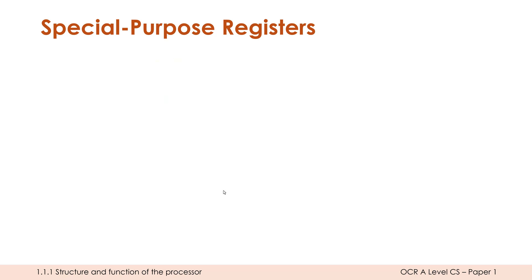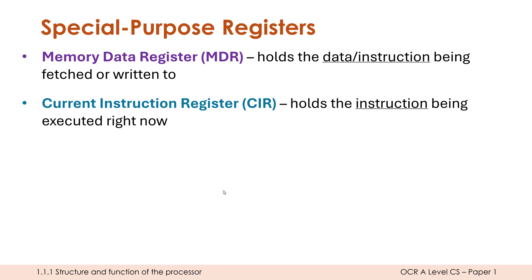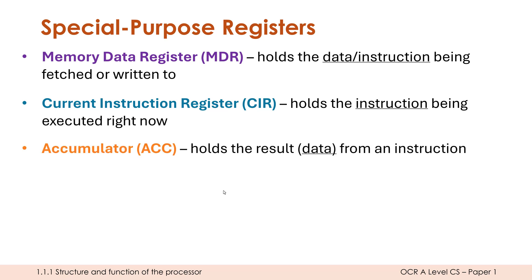Those two registers — PC and MAR — hold addresses. The next three hold either data or instructions. The MDR, or memory data register, is really the sibling of the MAR: the MAR holds the address, while the MDR holds the actual data or instruction being fetched or written. The current instruction register, or CIR, holds the instruction currently being executed — hence the name. The PC holds the address of the next instruction; the CIR holds the actual instruction currently being executed. Finally, the accumulator, shortened to ACC, holds the result from an instruction.